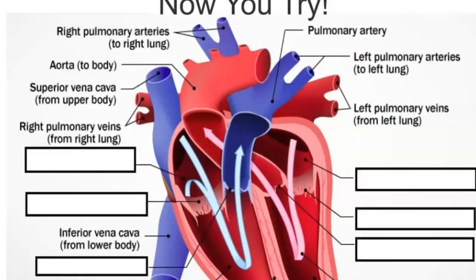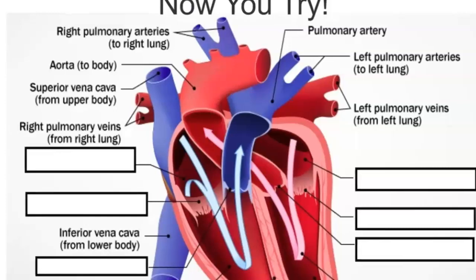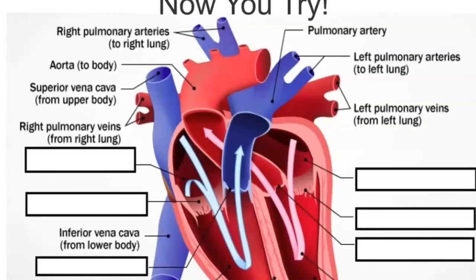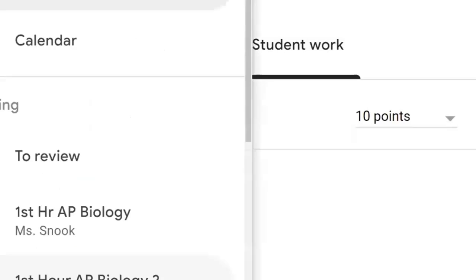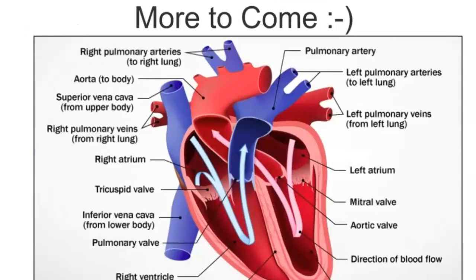Today we covered anatomy; physiology and circulation will come another day. In your Google Classroom you have a single slide to fill in for heart anatomy. Remember: you're looking at the heart anatomically correct, so its left is your right. The right atrium will be on your left side. Atria are on top, ventricles on the bottom. The tricuspid valve is on the right, bicuspid or mitral on the left. The pulmonary semilunar guards the pulmonary artery; the aortic semilunar guards the aorta.